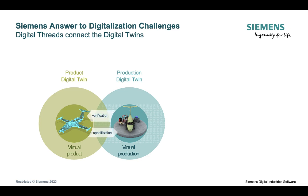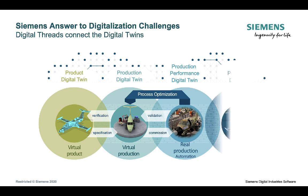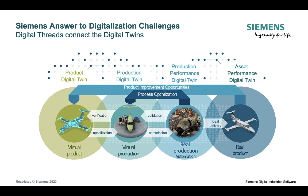We iterate back and forth between those two, making the plane better and better through the agile process until it's ready for real production. At that point, we automate the factory and make a digital twin of the factory, making sure that the assembly lines are balanced. Then, when we ship the plane, we have a digital twin of the real plane and we're using that to track defects, customer support issues, and service issues — feeding everything we learned back to the beginning of the process to improve later iterations of the same aircraft.